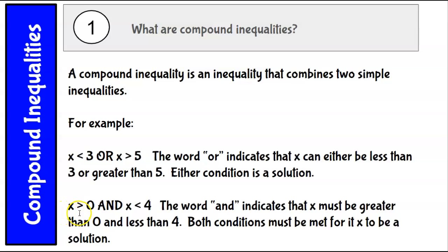In this example, x is greater than 0 and x is less than 4. Again, it's a compound inequality — two simple inequalities joined together to make one compound inequality. The word 'and' indicates that x must be greater than 0 and less than 4. Both conditions must be met for x to be a solution.